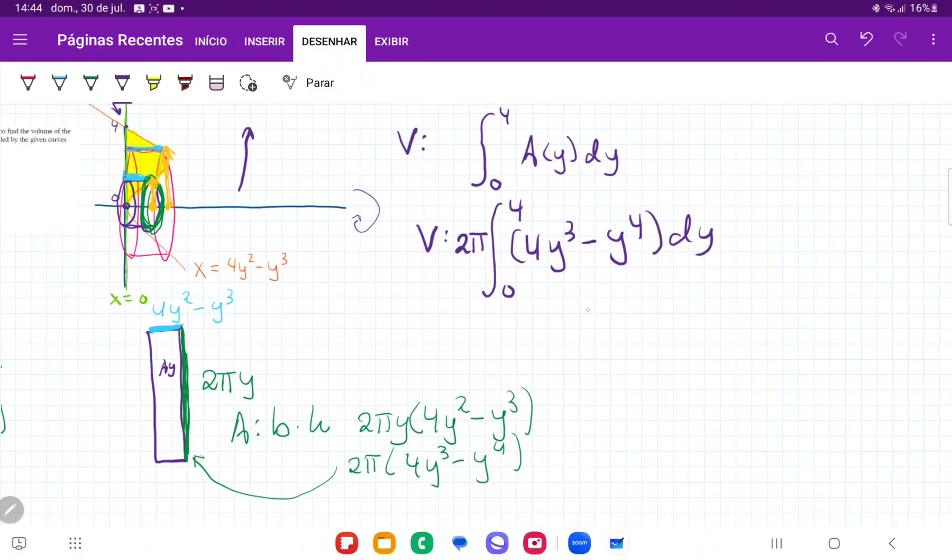So once we have this, we are just going to integrate it. So that's 2 pi times 4 y to the power of 4 over 4 minus y to the power of 5 over 5 evaluated from zero to 4.